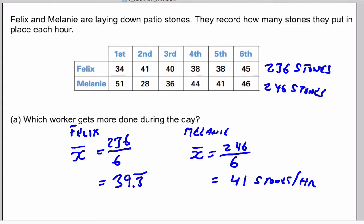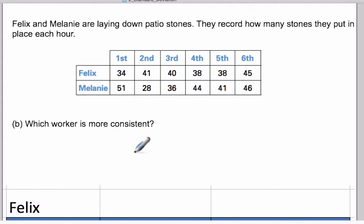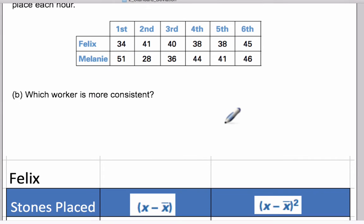Now the question is, which worker is more consistent? If you look at the data here, you can actually start to see the range from lowest to highest. For Felix it's 34 up to 45, whereas Melanie has a low of 28 and a high of 51, and so her data is quite spread out from the 41.